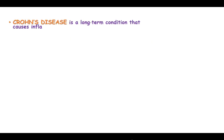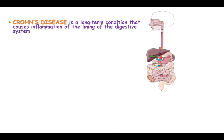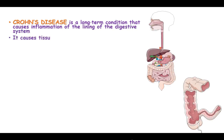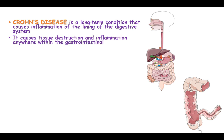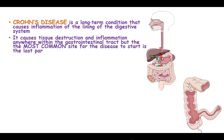Crohn's disease is a long-term condition that causes inflammation of the lining of the digestive system. It causes tissue destruction and inflammation anywhere within the gastrointestinal tract, where the most common site for the disease is the last part of the small intestine, known as the ileum.